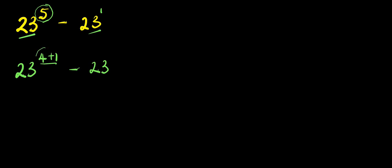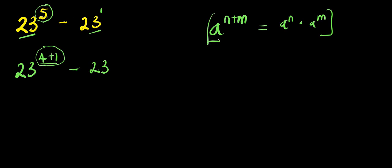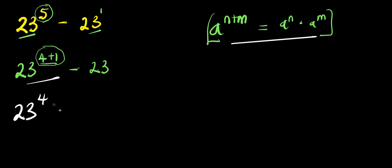So because of this, let's apply this identity: if you have a to the power of n plus n, it equals a to the power n times a to the power n. By applying this identity here, we have 23 to the power of 4 times 23 to the power of 1, which is the same thing as 23 minus 23.